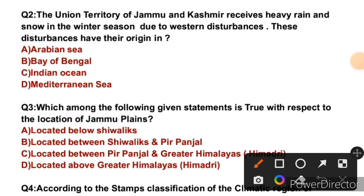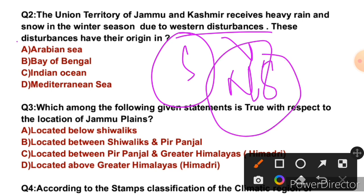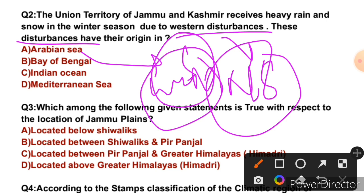Question 2: The UT of Jammu and Kashmir receives heavy rain and snow in the winter season due to Western Disturbances. These disturbances have their origin in which region? In Kashmir Valley, snowfall happens in winter due to Western Disturbances, and in northern India, rainfall also occurs in winter because of these disturbances. These moisture-bearing winds originate from the Mediterranean Sea. So the right answer is D. Write in the comment section which continent lies to the north and which to the south of the Mediterranean Sea.